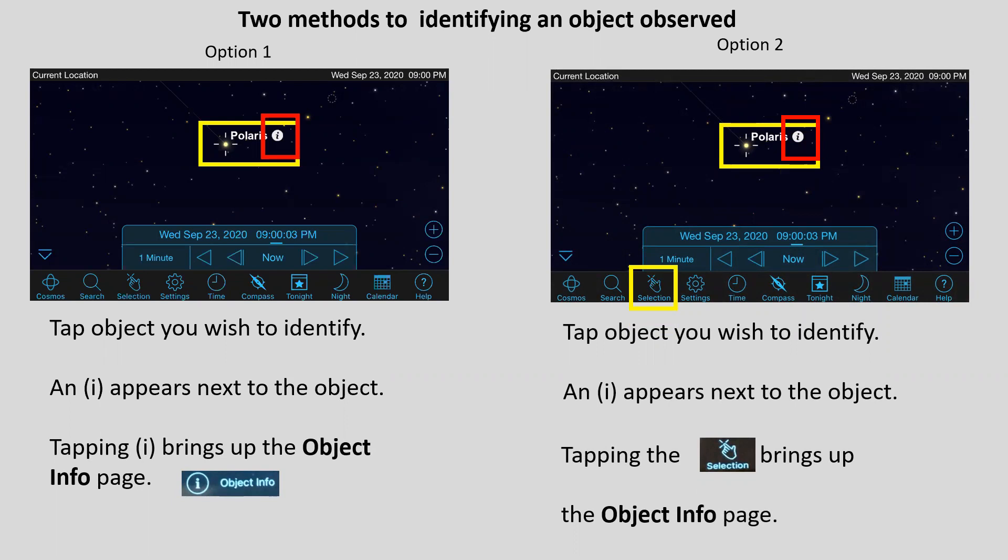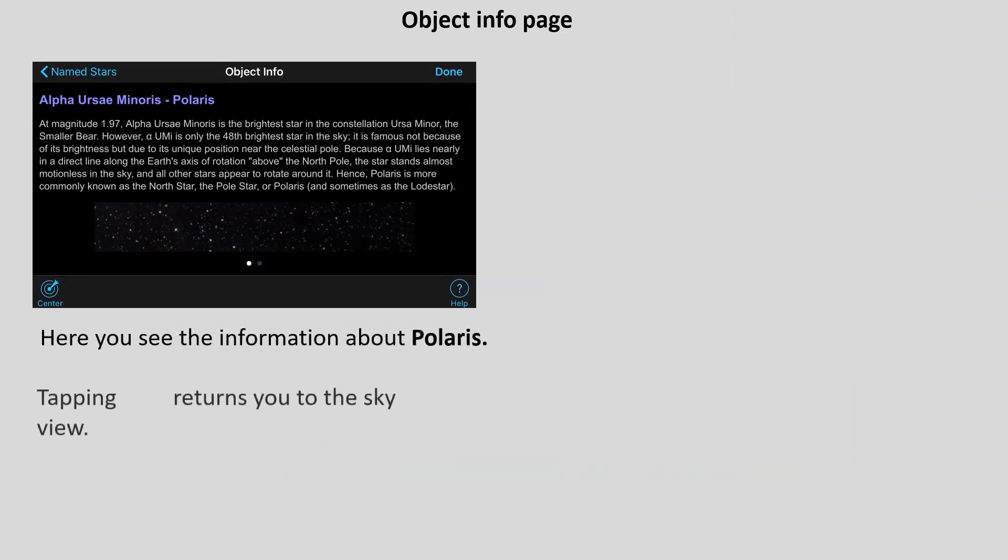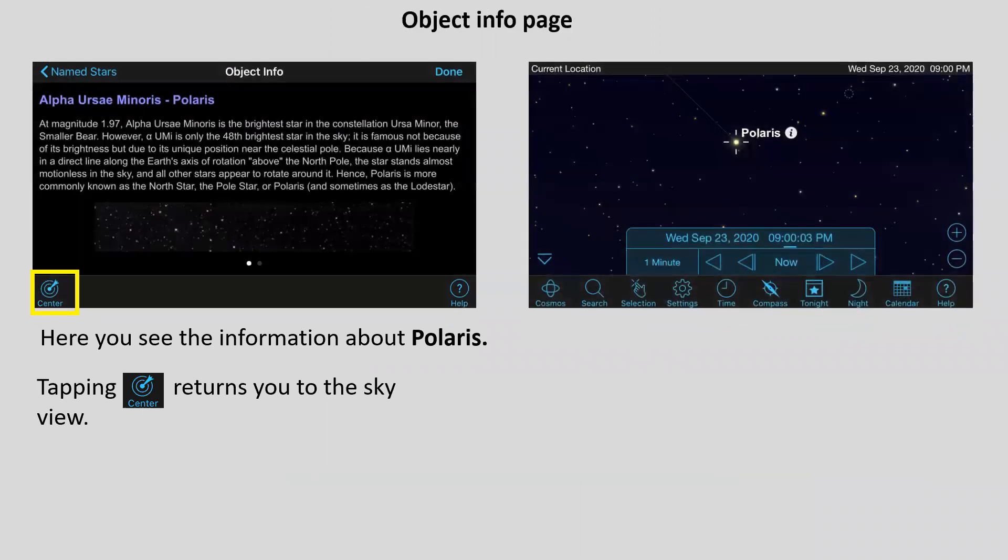Okay, so you've tapped it, and here comes the information page. And it talks to us about Polaris. It tells us how bright it is, give you some more information about it. If it was a galaxy, it would talk about the galaxy. Whatever it may be, it's the information about that object. Once you're done reading it, you come over, and you select Center. And it will return you to the page, to the sky where you were looking at earlier, in this case, Polaris.